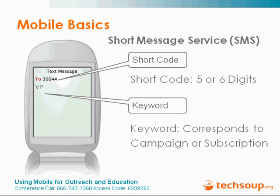When someone texts in, we need to know what campaign they're talking to — that's where the keyword comes in. You text in a keyword to a short code, and that identifies for the provider what campaign you're talking to and tells them how to respond. When you're voting on American Idol, the name you text in is the keyword, and you text that to a five-digit short code. There's an organization set up by the carriers to manage and lease out these short codes — you can't buy them, but you can lease them, and they're rather expensive.